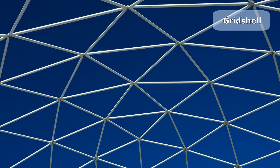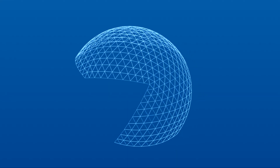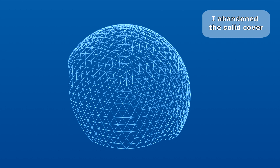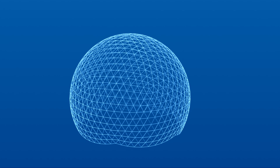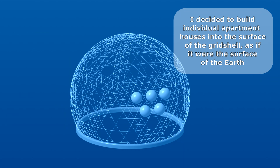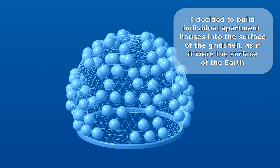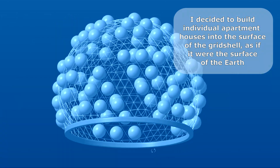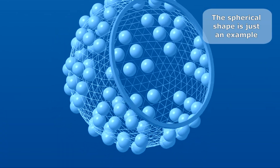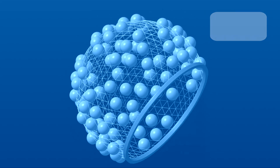Many people know or have heard about the so-called grid shell. I have decided to use grid shell differently, and first of all I abandoned the solid cover. Then I decided to build individual apartment houses into the surface of the grid shell as if it were the surface of the Earth. The spherical shape is just an example. Next I will tell you about what real apartments are going to look like.